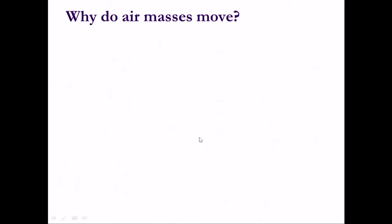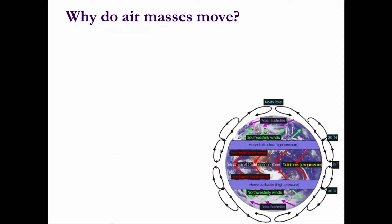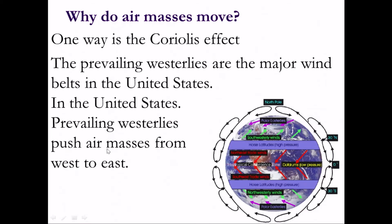Why do air masses move? Generally they can move based on global wind currents: the Coriolis effect, westerlies, and easterlies. The prevailing westerlies in the United States are one of the major wind belts, so most wind in the United States moves from west to east. In Central America, it can actually move from east to west — those are called easterlies. And at 60 degrees north or more, it's also easterlies.